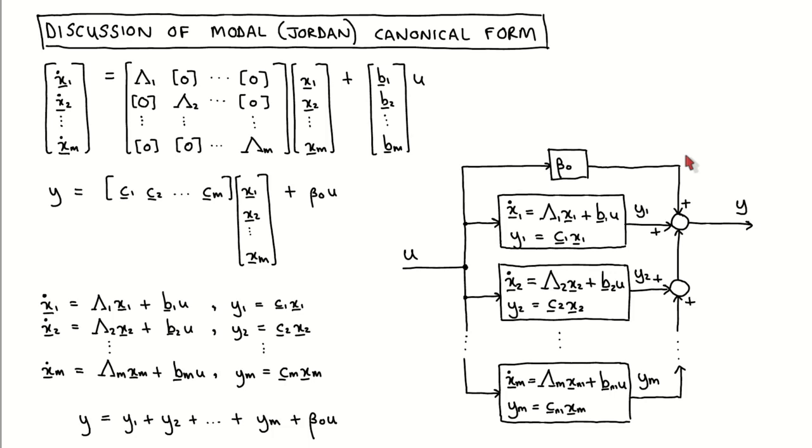By converting the system to modal canonical form, we can view the system dynamics as the combination of the dynamics of decoupled modes. These modes are usually much simpler to understand than the full system, which could make our analysis of the system dynamics much simpler.